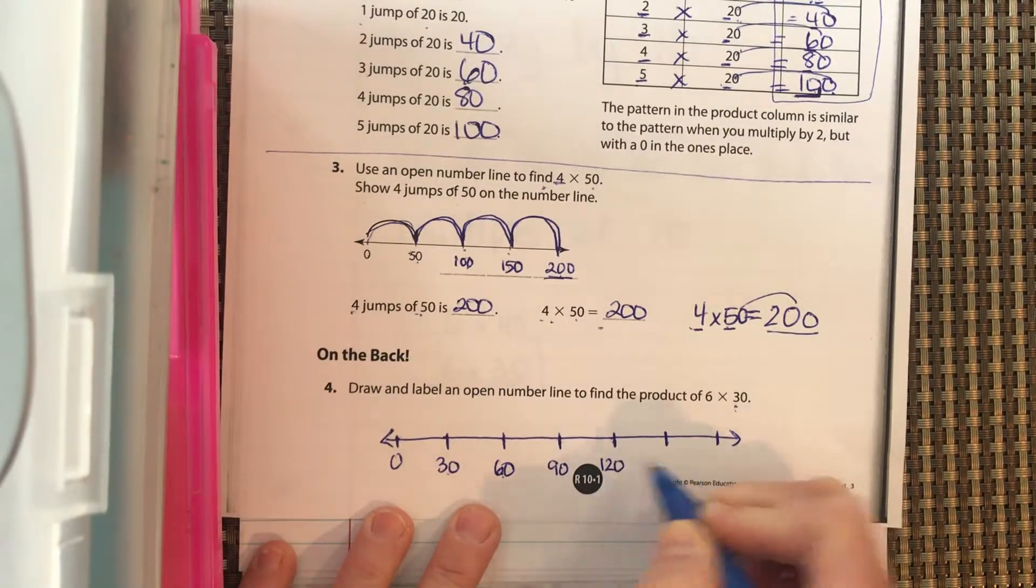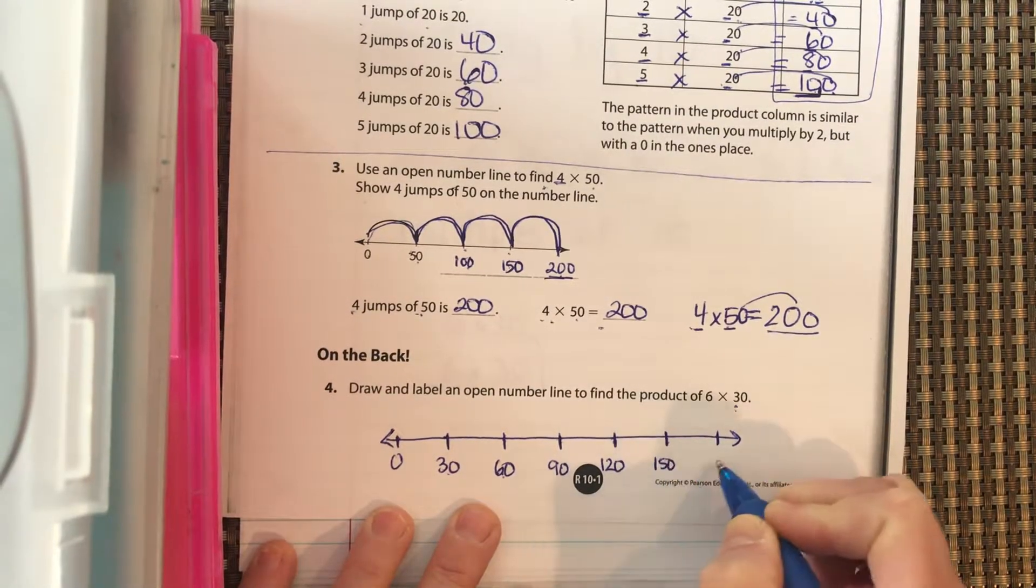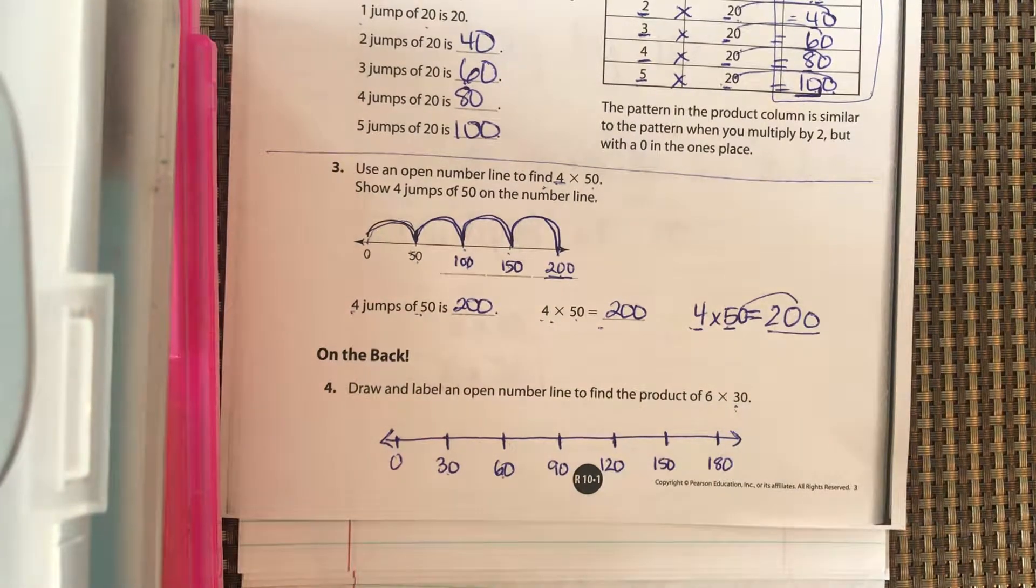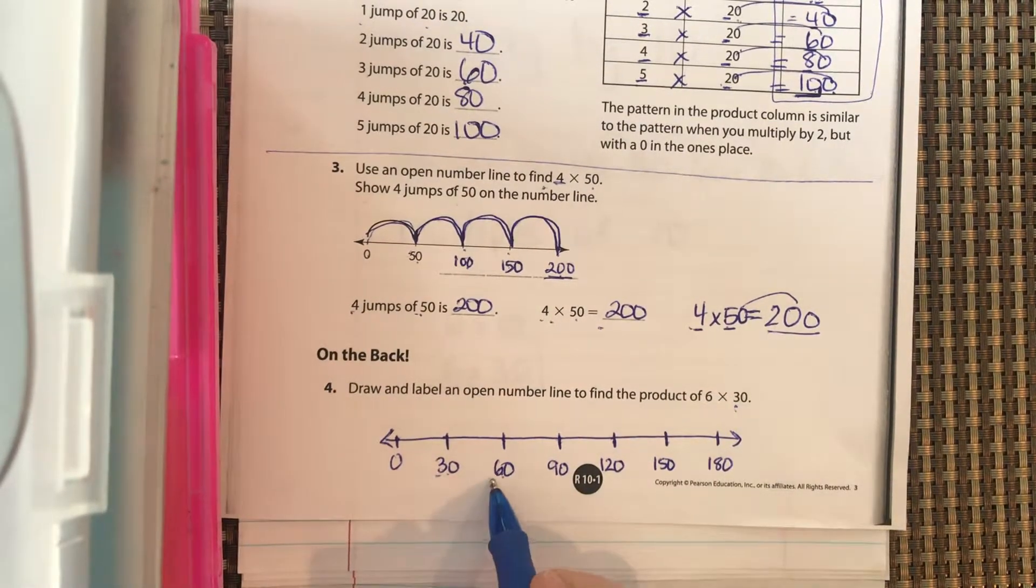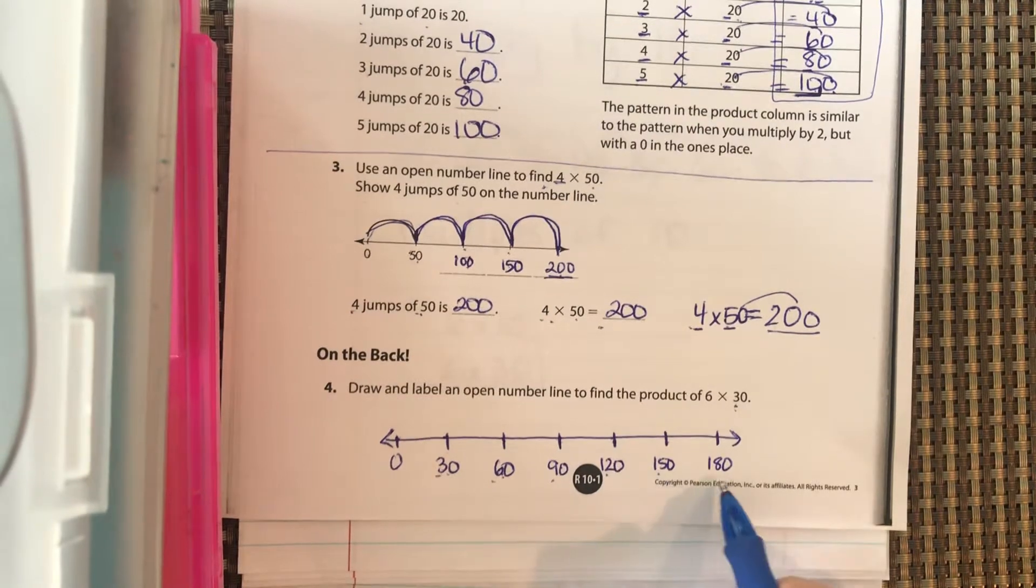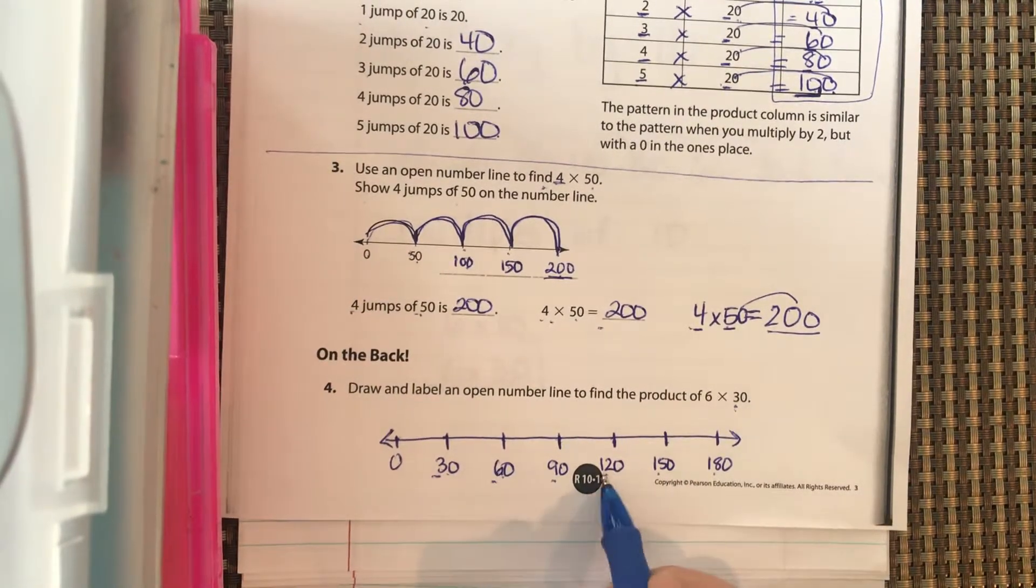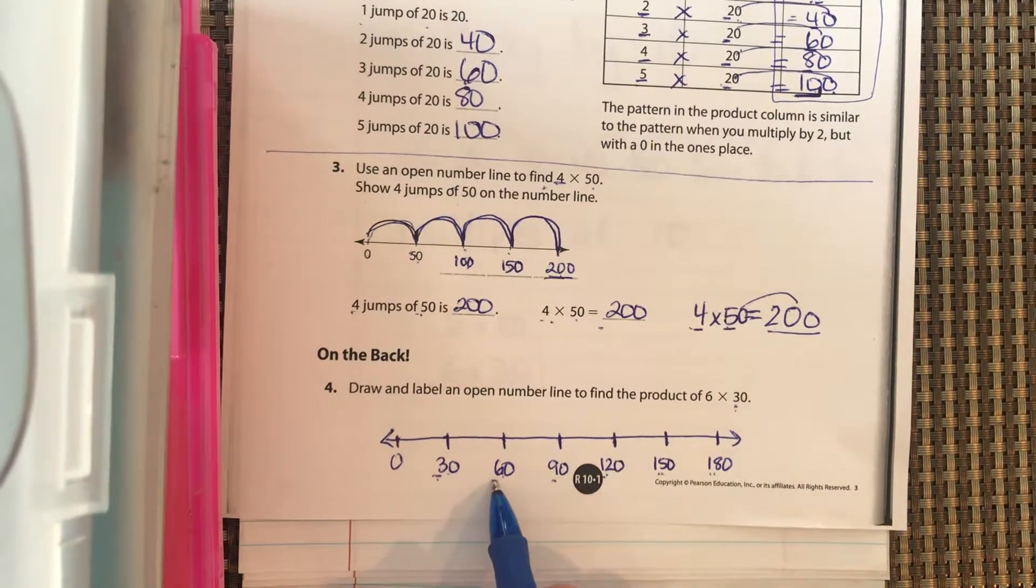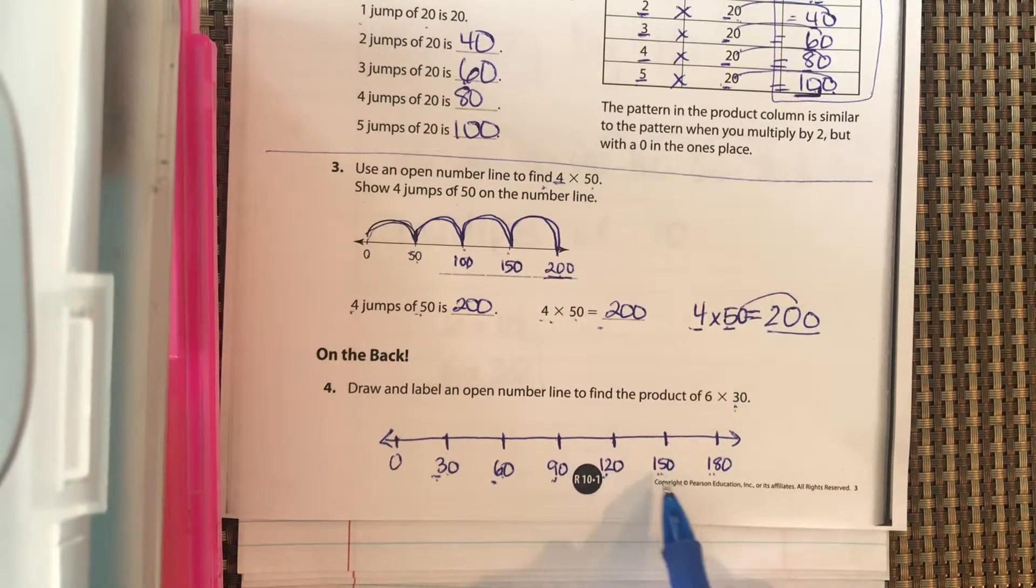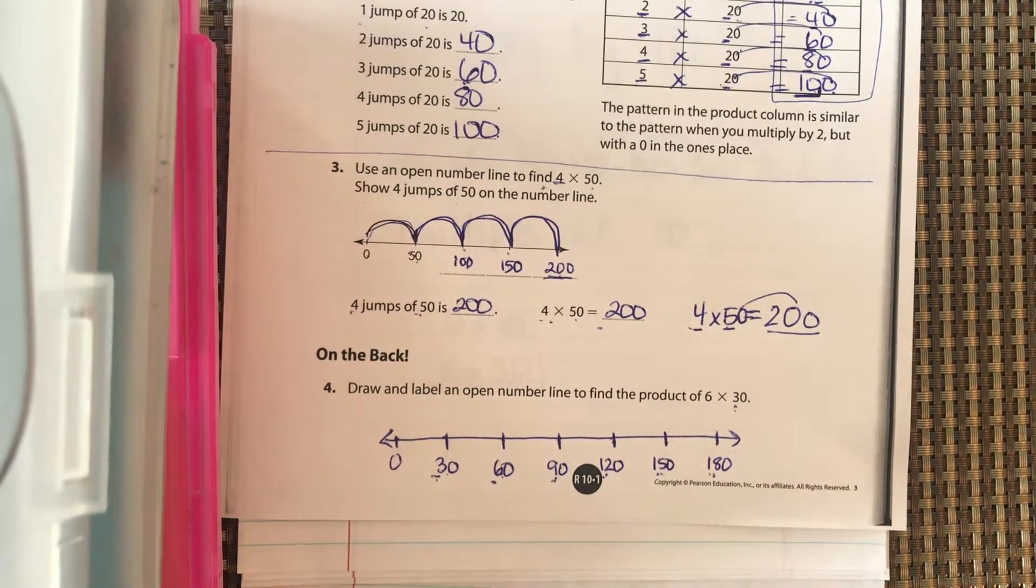Should be 120, 150, and 180. We're just adding 30 each time. But if you look, it's 3, 6, 9, 12, 15, and 18, which is multiples of 3 also. 3, 6, 9, 12, 15, 18. 3 times 1, 3 times 2, 3 times 3, 3 times 4, 3 times 5, and 3 times 6.